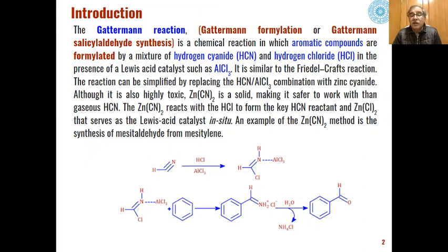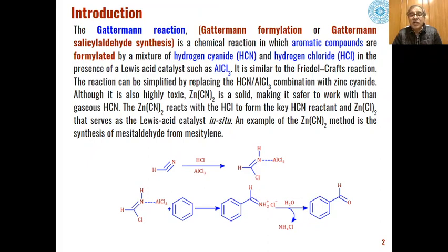If you see the overall reaction, this is similar to what we have seen in Friedel-Crafts reactions. In Friedel-Crafts alkylation, we used alkyl halides and a Lewis acid as the catalyst. Here, instead of alkyl halide, we are using a mixture of HCN and HCl. This mixture, along with the Lewis acid, will act as an electrophile which is added to the aromatic system to give an intermediate product, which on hydrolysis gives aldehydes or ketones as the product.